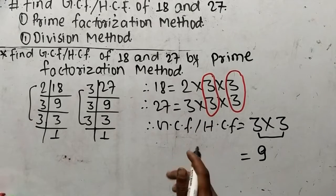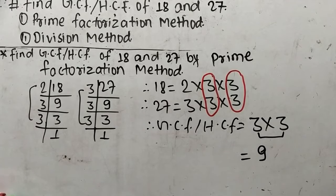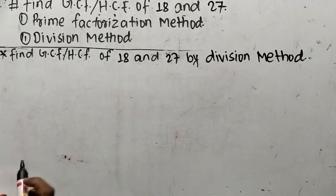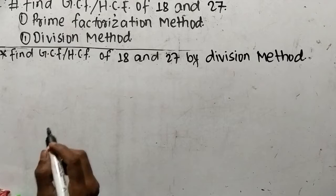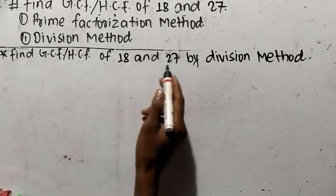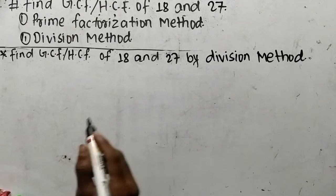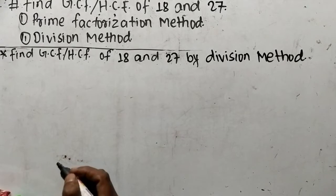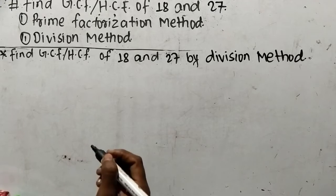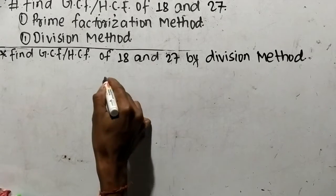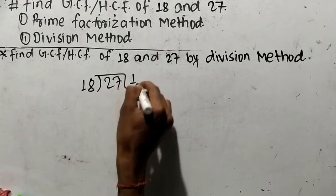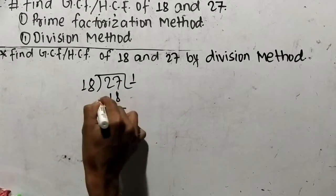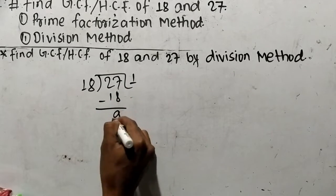In this way we can find out GCF or HCF by prime factorization method. Now our second method is the division method. Let's find GCF or HCF of 18 and 27 by division method. We have to divide the greater number, which is 27, by the lesser number, which is 18.